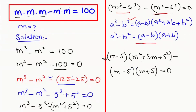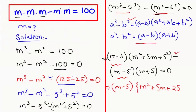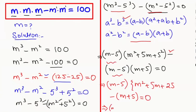Now I'm going to take (m minus 5) as a common factor. So we get (m minus 5) times [(m squared plus 5m plus 25) minus (m plus 5)] equals zero. Now I'm going to simplify this further: (m minus 5) times [m squared plus 5m plus 25 minus m minus 5] equals zero.